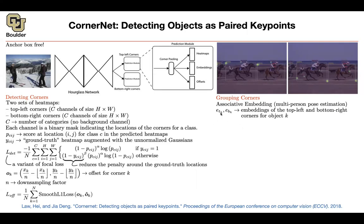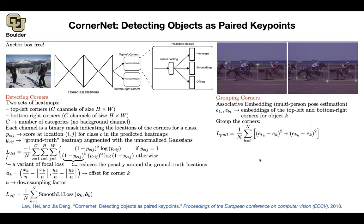With associative embeddings, you output embedding vectors for each top-left and each bottom-right corner. You try to group corners in the loss function by pulling these vectors toward a center, which is the average embedding of the top-left and bottom-right pair. You pull both embeddings toward this average throughout training.